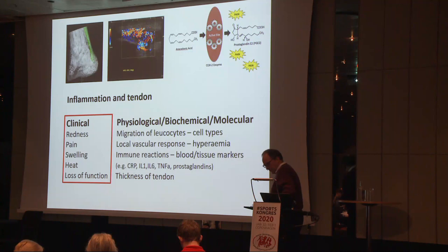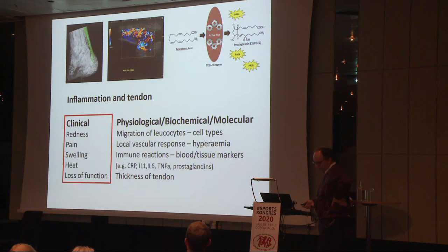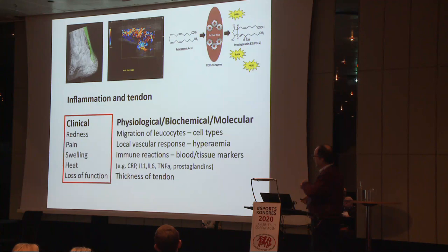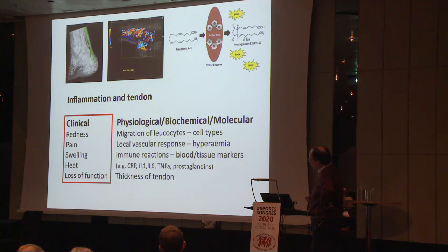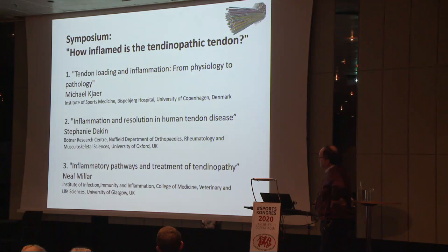This is a topic that we'll try to address in a little bit different ways, but hopefully at the end, if not a consensus, at least a confusion at a somewhat higher level. All of us are challenged with the clinical science of inflammation in relation to tendon, but there are also a lot of aspects of tendon pathology we'd like to touch upon — all the way from different types of cells, potential migration or change in phenotype of cells, local vascular response in tendinopathy, immune reactions whether measured locally or in the blood, and finally also dimensions of the tendon, the swelling of the tendon.